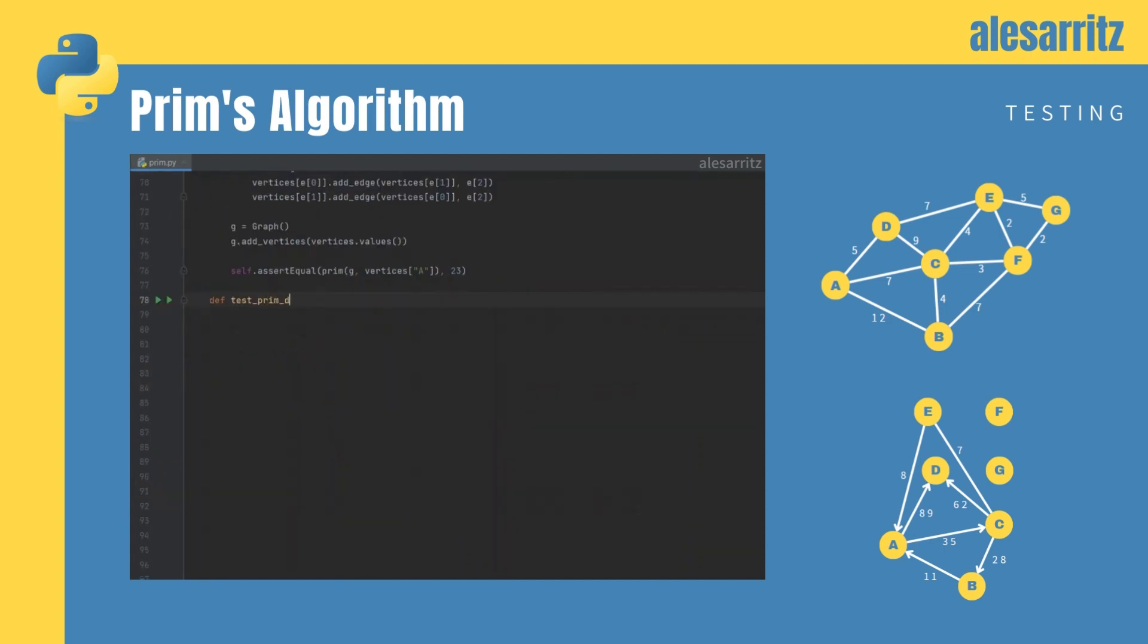In the second test, we will build a disconnected graph, and then we'll try to obtain the minimum spanning tree. The algorithm should return a weight equal to infinity.